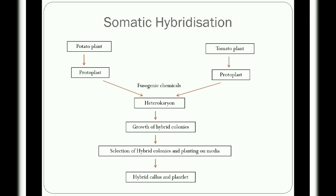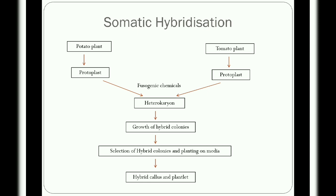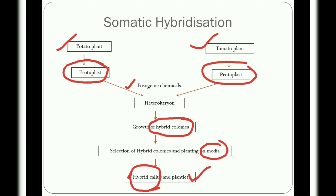Protoplast culture is used for production of somatic hybrids between distantly related species. The in vitro fusion of plant protoplasts derived either from somatic cells of the same plant or from two genetically different plants is called somatic hybridization. In somatic hybridization, protoplasts from two different species — such as potato and tomato — are isolated and fused in the presence of fusion agents like polyethylene glycol to form a heterokaryon containing two different nuclei. The heterokaryon is grown on medium to obtain hybrid colonies, then hybrid callus, and finally plantlets with characteristics of both species.